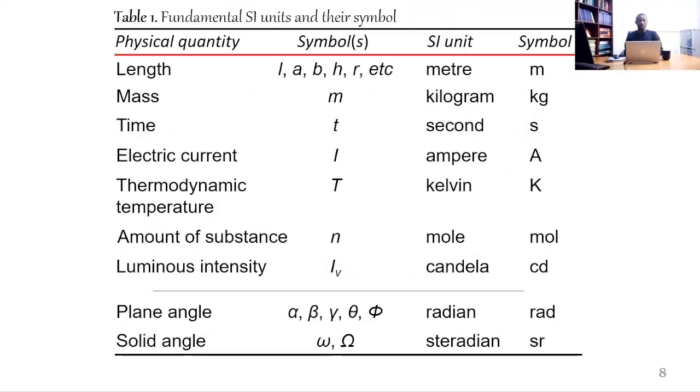This is Table 1 that has fundamental SI units as well as their symbols. Here is the physical quantity, the symbol or symbols, the SI unit, and the symbol for the SI unit. Our first physical quantity is length, represented by various symbols L, A, B, H, R, etc. The SI unit is meter and the symbol for meter is m.